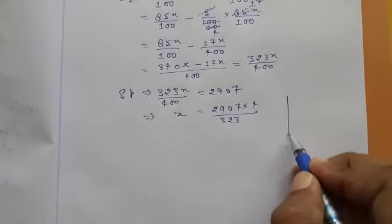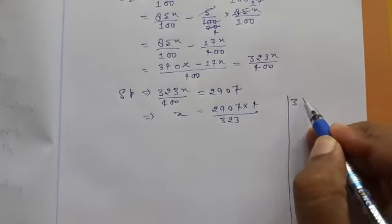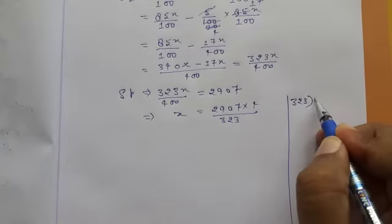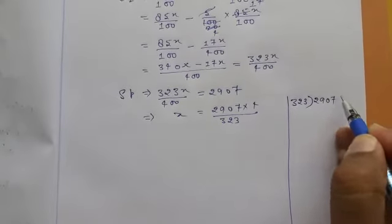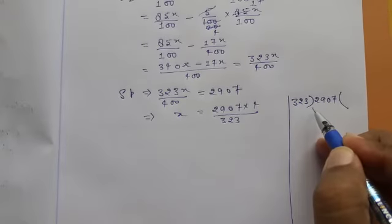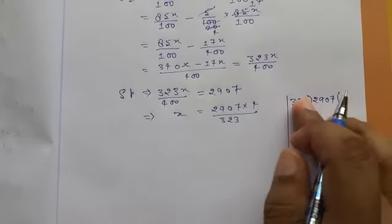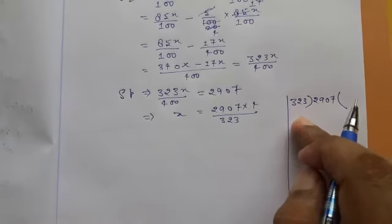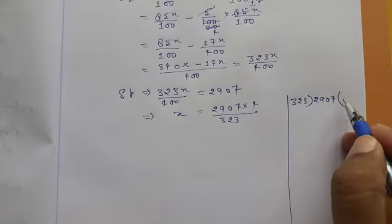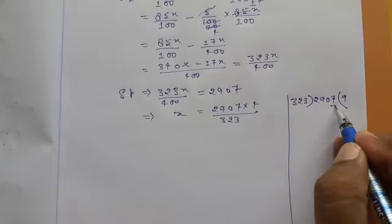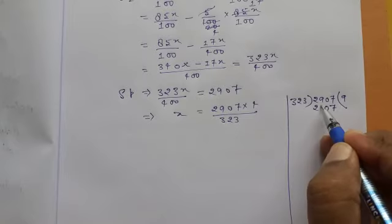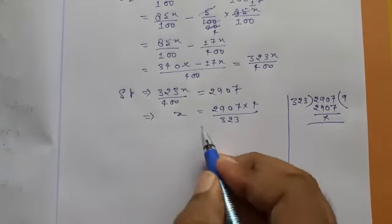Let me do rough work. 323 divided by 2,907. I think it will be 9. Yes, correct, it will be 9.